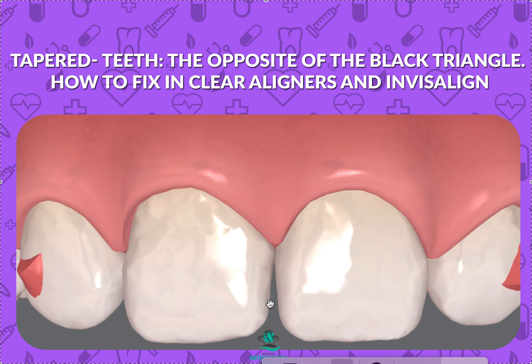There is no way to fix this without doing some easy composite. You can do a composite laminate, a four-surface composite, or an actual veneer — especially since these teeth are kind of funky shaped and very rounded anyway. It's going to look better when this person grows up to have four veneers as opposed to just two, or four really nicely shaped composites for now.